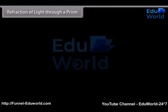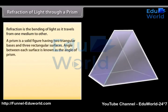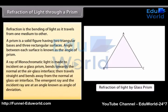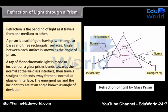Refraction of light through a prism. Refraction is the bending of light as it travels from one medium to another. A prism is a solid figure having two triangular bases and three rectangular surfaces. The angle between each surface is known as the angle of prism. A ray of monochromatic light incident on a glass prism bends towards the normal at the air-glass interface, then travels straight and bends away from the normal at the glass-air interface. The emergent ray and the incident ray are at an angle known as the angle of deviation.